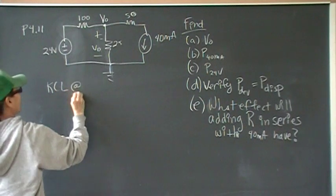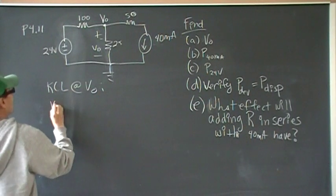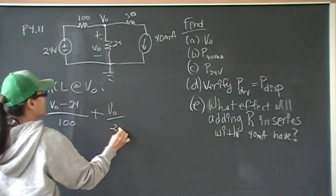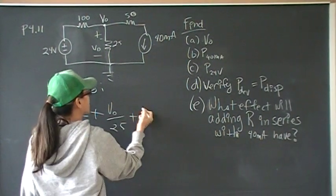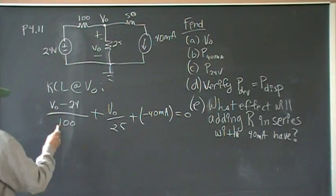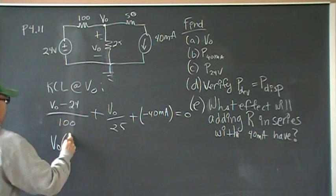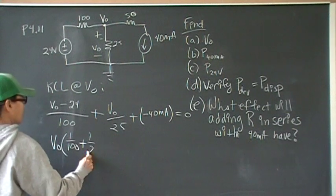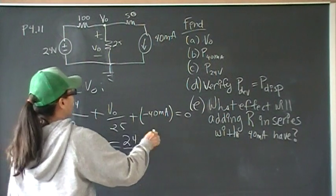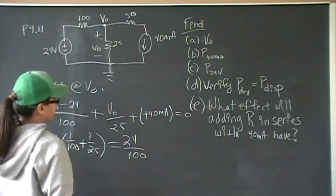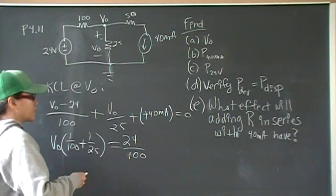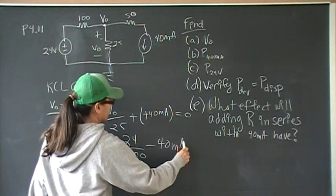So KCL at V naught is going to give us V naught minus 24 over 100, plus V naught over 25, plus this current here, which is 40 milliamps. So that's going to get 40 milliamps, and that has to equal zero. The current is going away from the node, so it's positive current. Because current is defined to be positive, it is leaving the node. It's defined to be leaving the node, so this should be negative 40 milliamps.